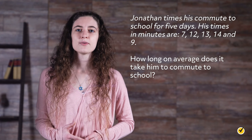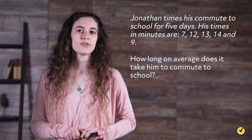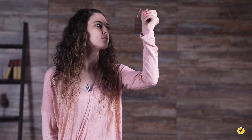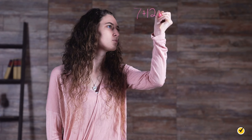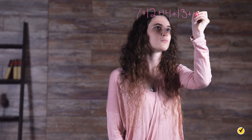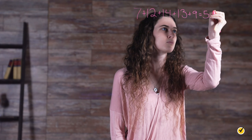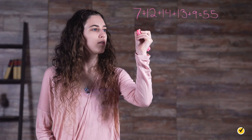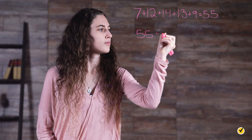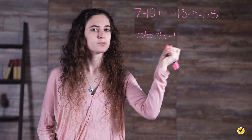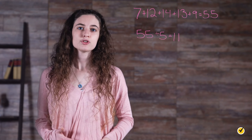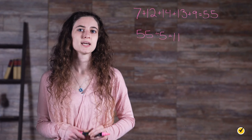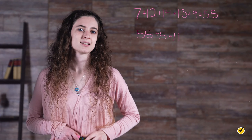The first step in finding our average is to add all our values together. Then we divide by the total number of values. So the average time it took him to commute to school is 11 minutes.